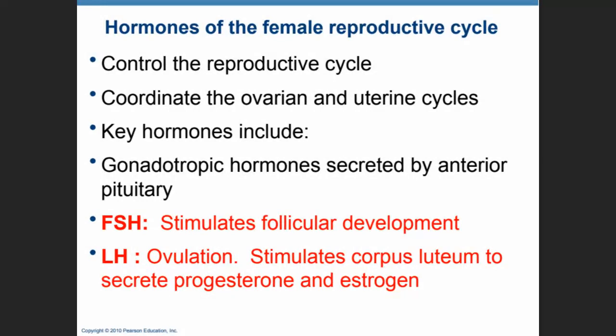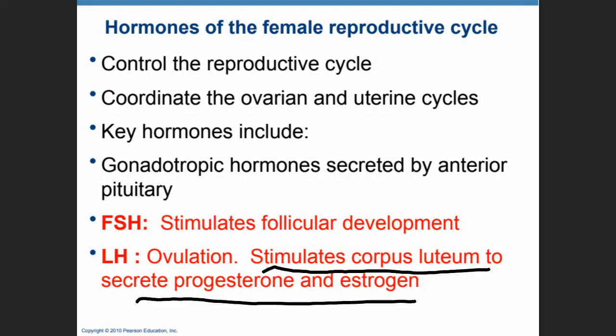The hormones of the female reproductive system are going to control the reproductive cycles, both the uterine and the ovarian cycle. These hormones are secreted by the anterior pituitary and are called gonadotropic hormones. These are FSH, which stimulates follicular development, and LH, which causes ovulation and stimulates the corpus luteum into secreting progesterone and estrogen.